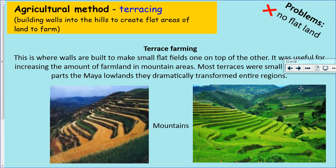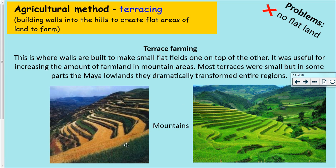The second agricultural method was terracing - the building of walls into hills to create flat areas of land to farm in those mountainous highland areas of Mesoamerica. Walls are built to make small flat fields one on top of the other. It was useful for increasing the amount of farmland in mountain areas. Most terraces were small but in some parts of the Maya lowlands they dramatically transformed entire regions.